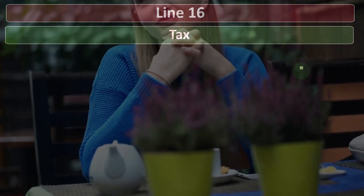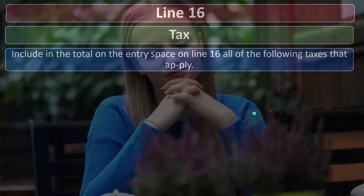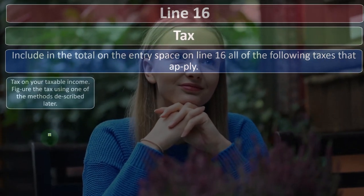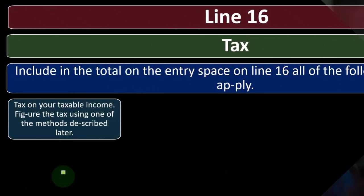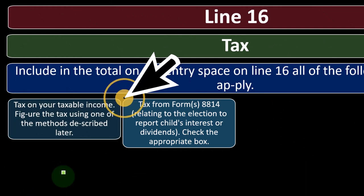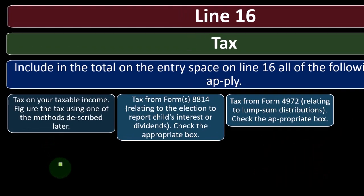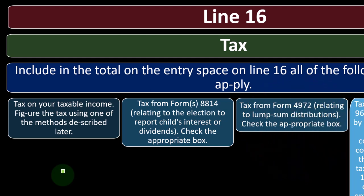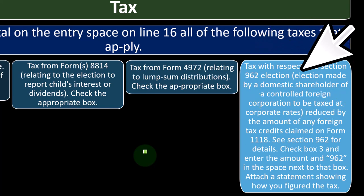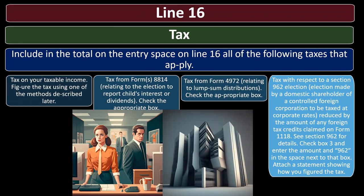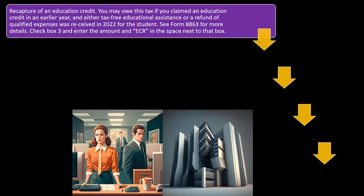Line 16 — Tax: Include in the total on Line 16 all the following taxes that apply. Tax on your taxable income: figure the tax using one of the methods described later. Tax from Form 8814, relating to the election to report a child's interest or dividends — check the appropriate box. Tax from Form 4972, relating to lump-sum distributions — check the appropriate box. Tax with respect to a Section 962 election — an election made by a domestic shareholder of a controlled foreign corporation to be taxed at corporate rates, reduced by any foreign tax credits claimed on Form 1118; check box 3 and enter the amount and '962' in the space next to the box. That's a more unusual situation.